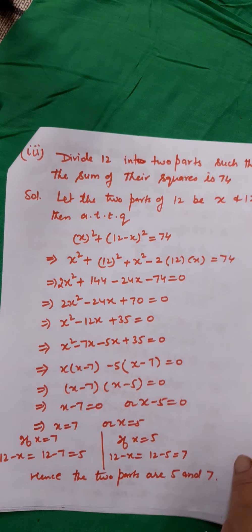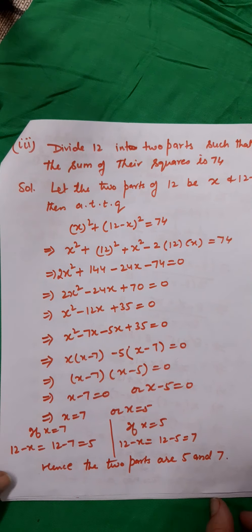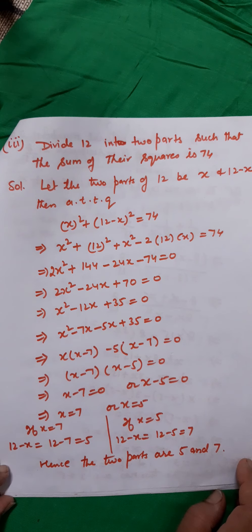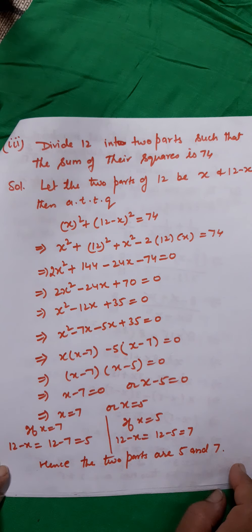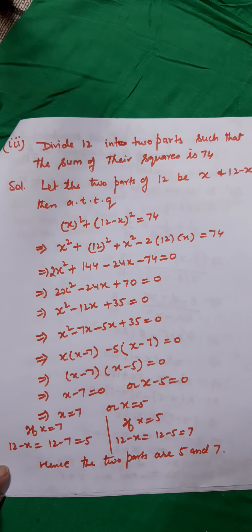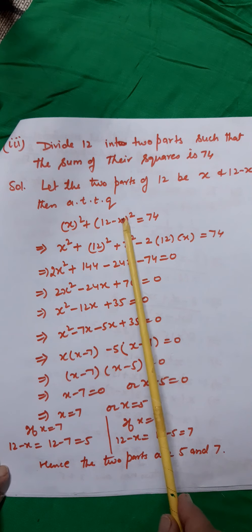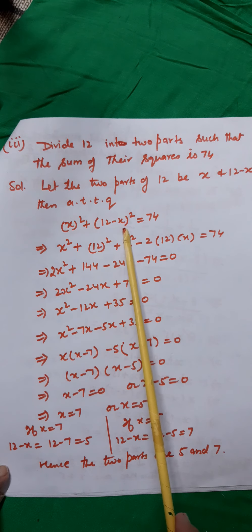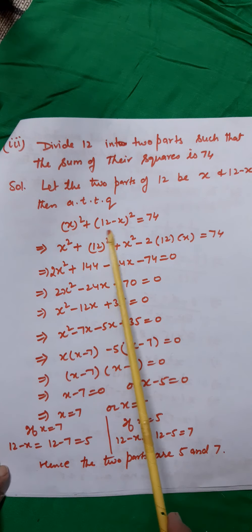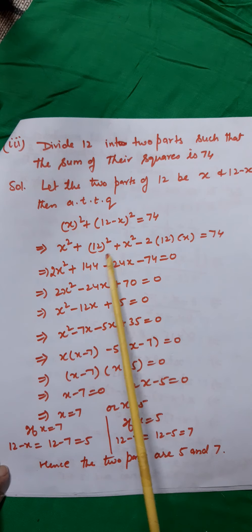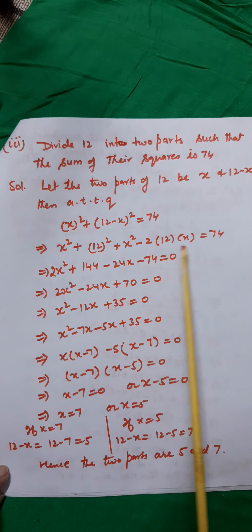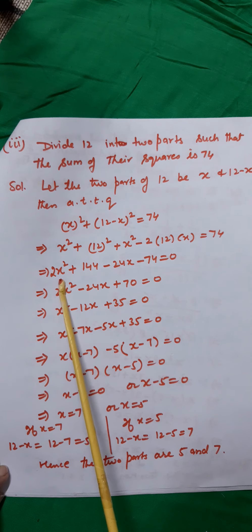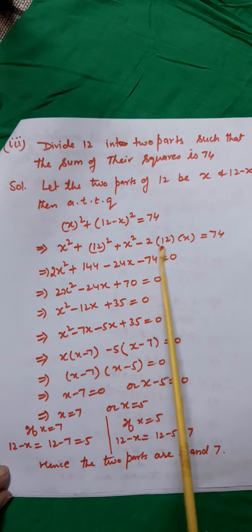Question 3: Divide 12 into two parts such that the sum of their squares is 74. Let the two parts be x and 12−x. Then x² + (12−x)² = 74. Expanding using the identity (a−b)² = a² + b² − 2ab: x² + 144 + x² − 24x = 74, giving 2x² − 24x + 144 − 74 = 0.